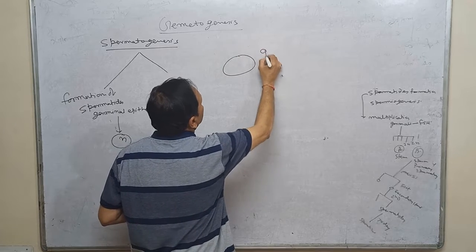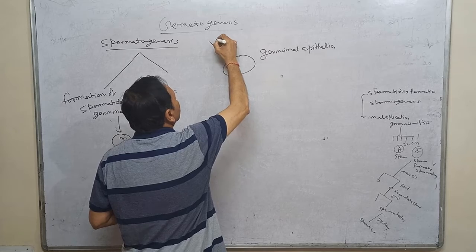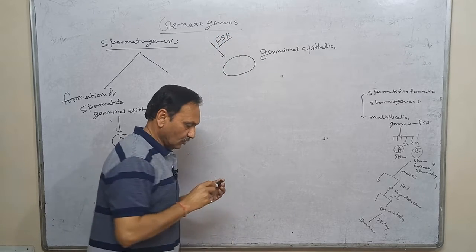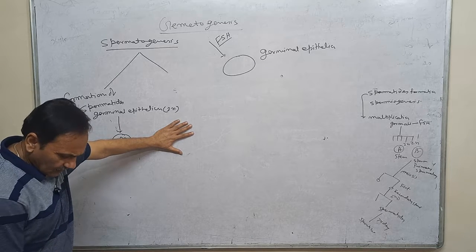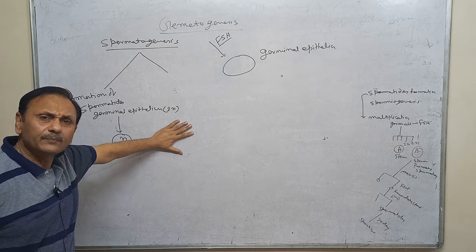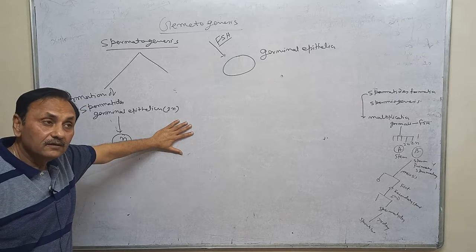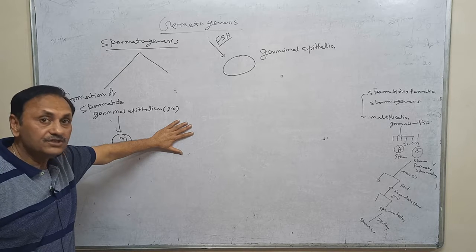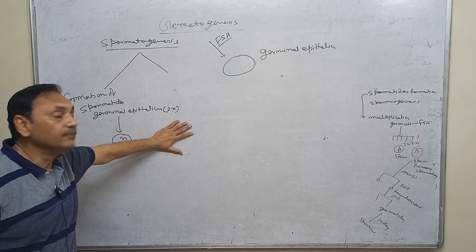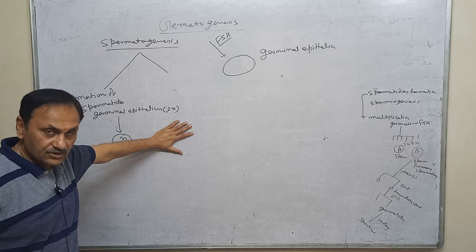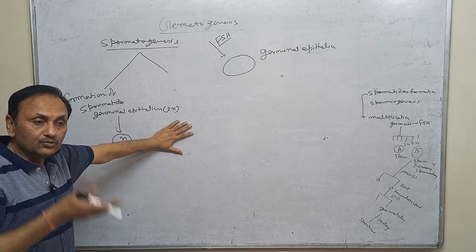Suppose this is the germinal epithelium. FSH is present and acts inside the scrotum. You must know that in all mammals, the testes are not present in the scrotum in all types. In certain mammals, the testes are present in the scrotum only during the breeding season. In certain mammals, it is still present inside the body cavity. But in the case of human beings, the testes are present inside the scrotum throughout life after shifting from the body cavity through the inguinal canal.